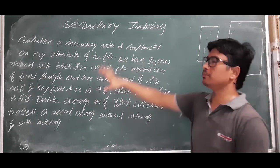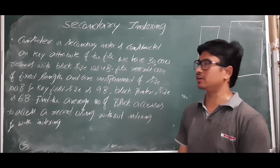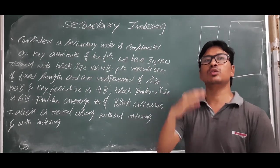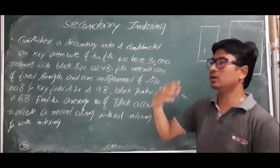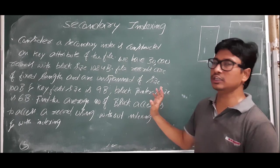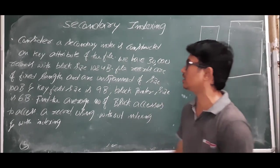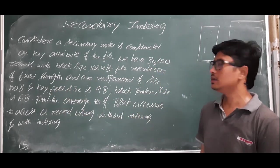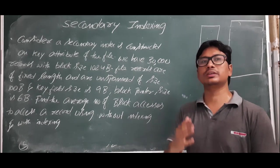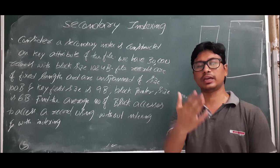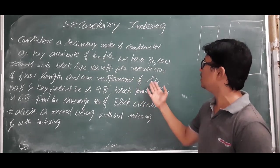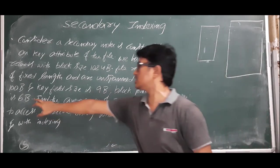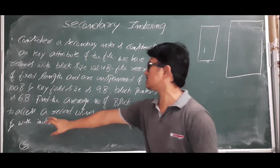Let me read out the question. Consider a secondary index constructed on a key attribute — meaning there are no duplicate values in that attribute. We have 30,000 records with block size 1024 bytes. File records are of fixed length and are unspanned, of size 100 bytes. The key field is 9 bytes and block pointer size is 6 bytes.